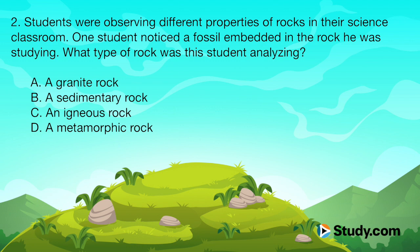Question 2. Students were observing different properties of rocks in their science classroom. One student noticed a fossil embedded in the rock he was studying. What type of rock was this student analyzing? A, a granite rock. B, a sedimentary rock. C, an igneous rock. Or D, a metamorphic rock.